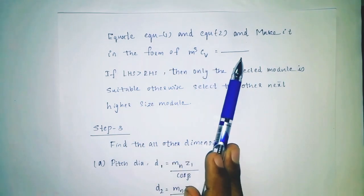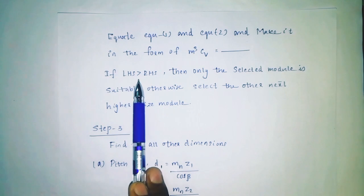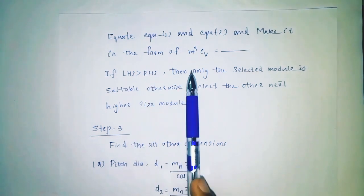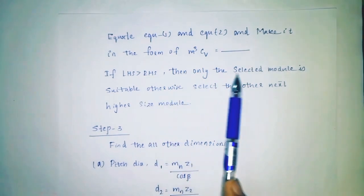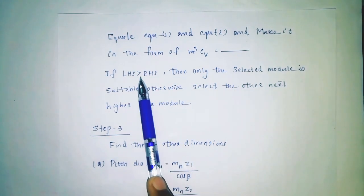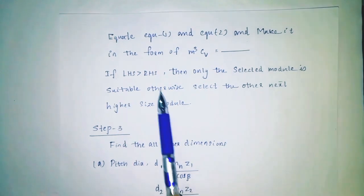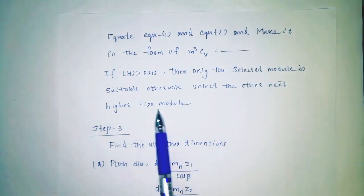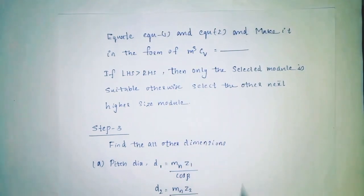Equate equation 1 and equation 2. If LHS is greater than or equal to RHS, then the selected module is suitable. If not, move to the next higher standard module size.